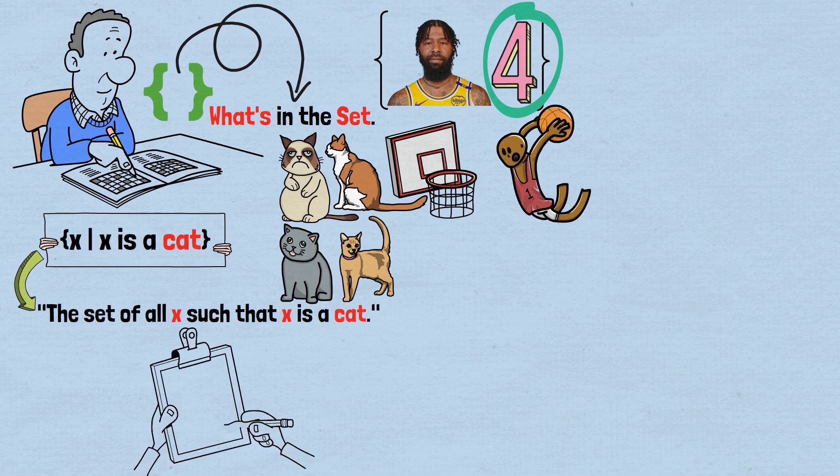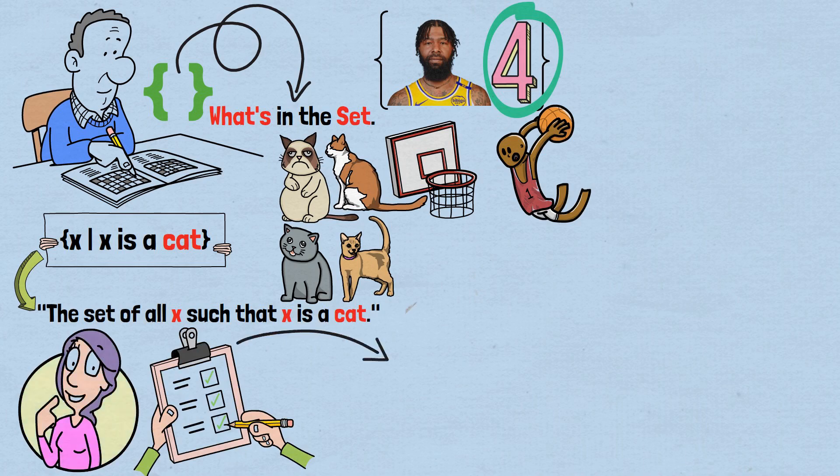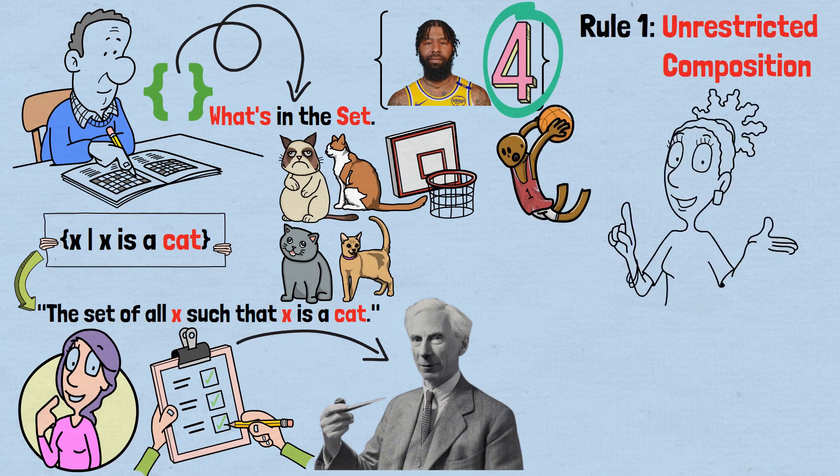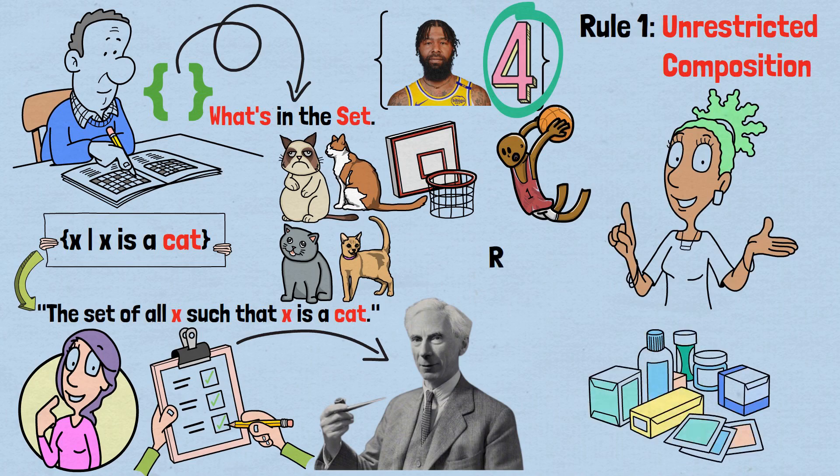Now, let's explore the rules that govern sets. These rules might seem obvious, but they're going to lead us straight into Russell's paradox. Rule one, unrestricted composition. We can make any set we want. Any collection of objects, no matter how random or bizarre, can form a set.